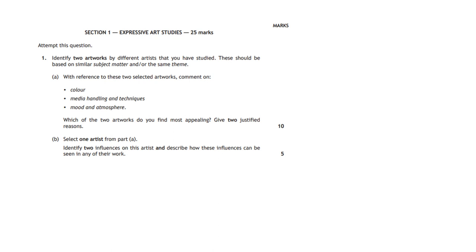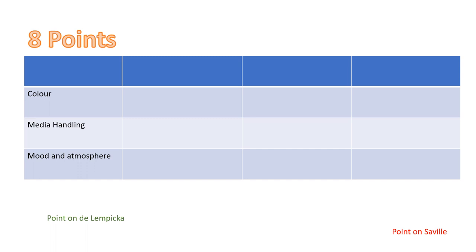The question then asks you to look at three different points — in this case colour, media handling and techniques, and mood and atmosphere. In responding to this part of the question we need to look at the three areas highlighted in the question. You must mention both artists in your response to this, but you don't need to literally compare and contrast. You just need to make sure that you have a point for each artist in each section.